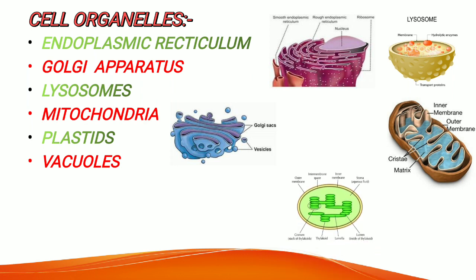Plastids are membrane-bound organelles found in the cells of plants, algae, and some eukaryotic organisms. They are divided into three types: chromoplast, chloroplast, and leucoplast. Vacuoles are also membrane-bound organelles found in all plant cells and some animal cells, and they are known as the storage bubble of the cell because they contain useful substances required by the cell.